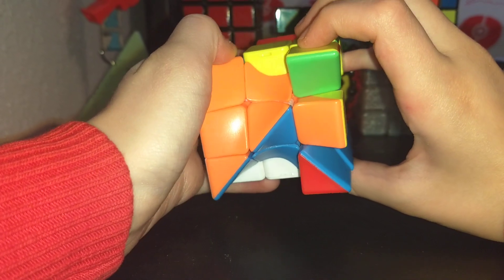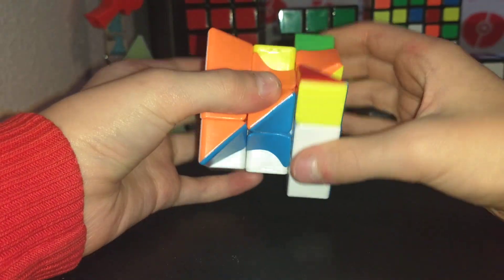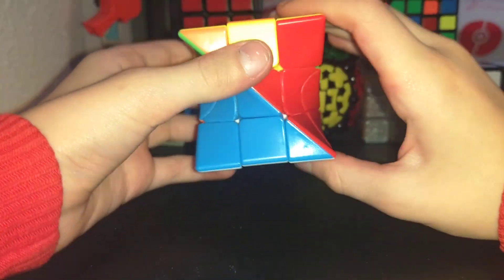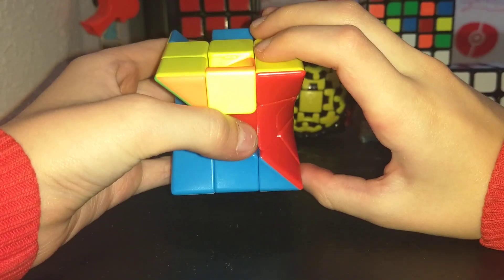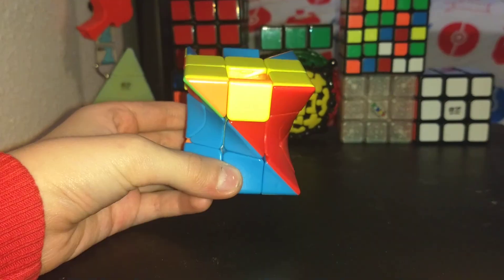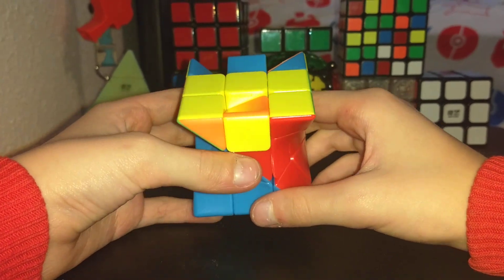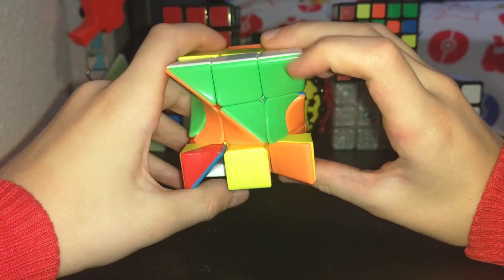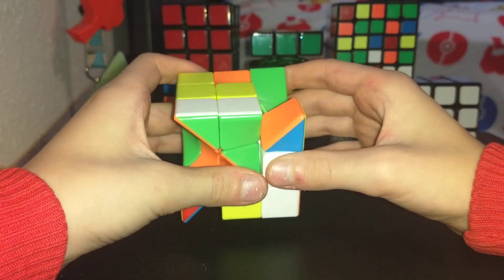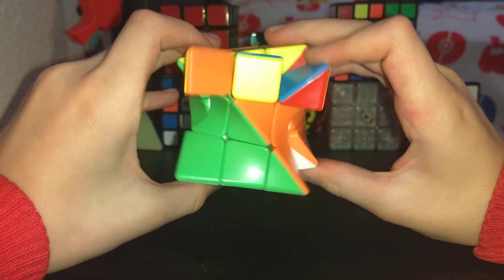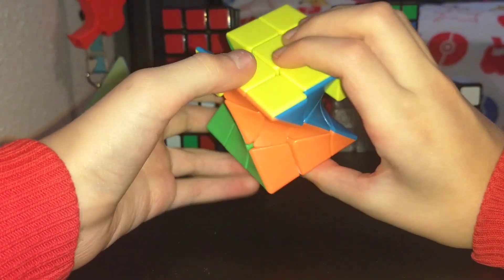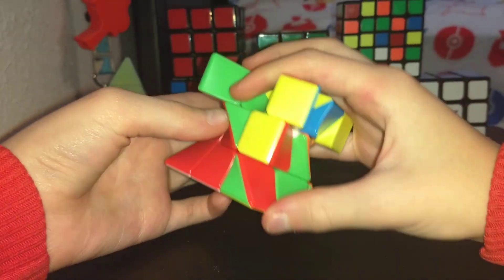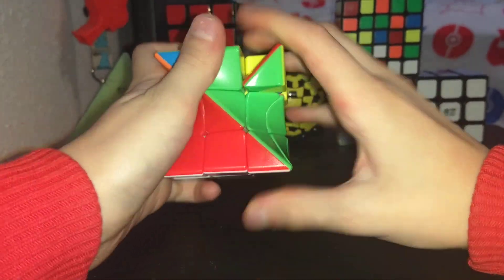So then we can just solve the rest of the cube like you would a normal cube. So here, one second, sorry, just needed to get a better angle that you can see. So then what you want to do is just to continue on. What the heck did I just do? So continue on solving. Then you'll get the cross, obviously.